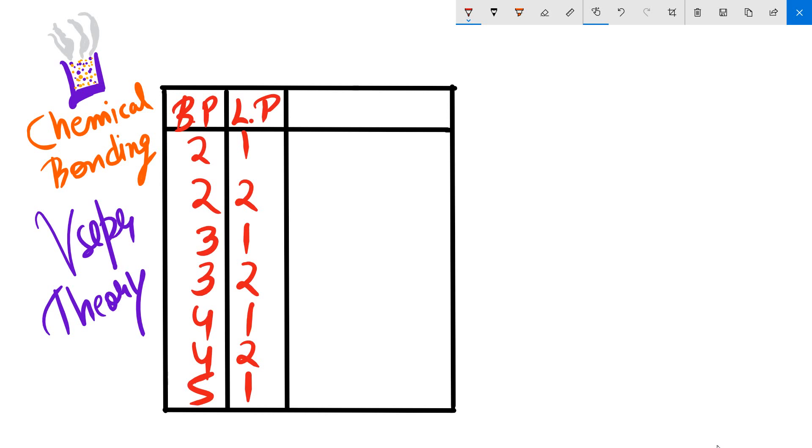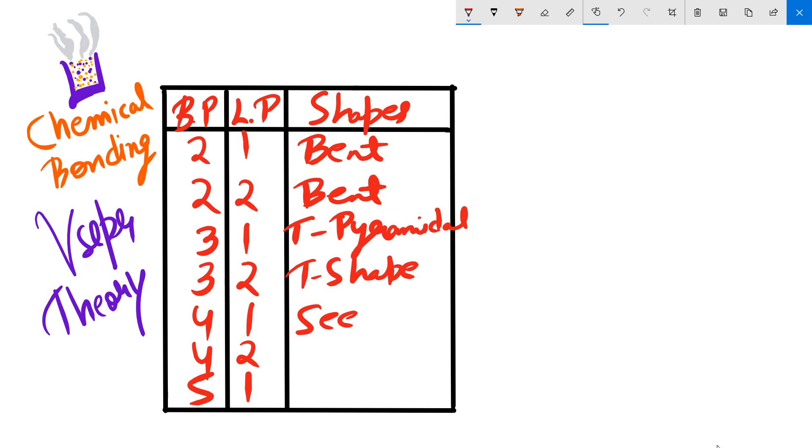And here I'll be writing the shapes. Okay so the shapes are bent, bent, T-pyramidal, T-shape, seesaw, seesaw and square planar, and square pyramidal.